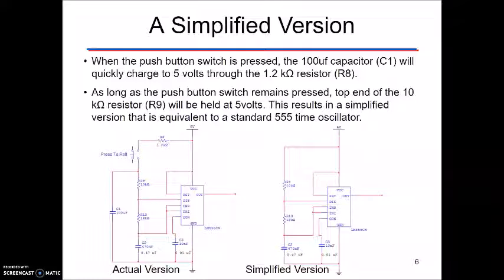As long as you push the button and the switch remains pressed, the top end of the 10k resistor R9 stays at 5 volts. So this results in a simplified version that's equivalent to a 555 timer oscillation. So that 555 timer is controlling our waves depending on how it is being fed through the different resistors and capacitors.